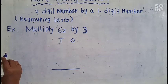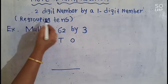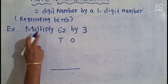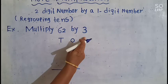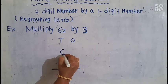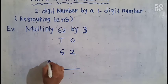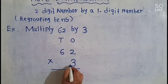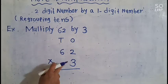Now we are going to see regrouping 10s multiplication. Here is the example: multiply 62 by 3. This is a 2-digit number, 62, and we have to multiply by 3. First we have to do the 1s multiplication.